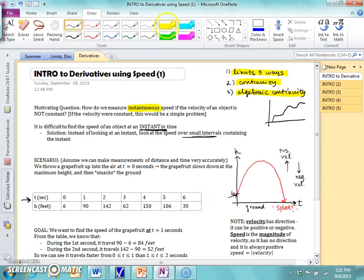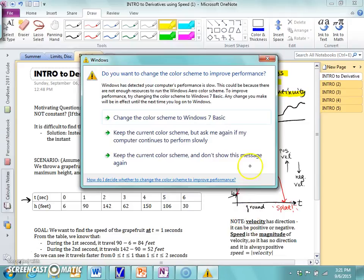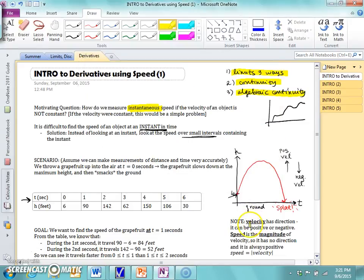Now since we're going to be talking about velocity and speed here, let me just make a note. If you're in physics, you probably remember this, but velocity has direction. It's a vector. So velocity can be positive or negative. So in this case right here, when the grapefruit's going up, the velocity's positive, and when the grapefruit's going down, it has negative velocity.